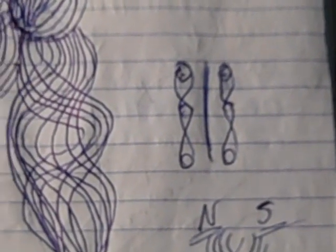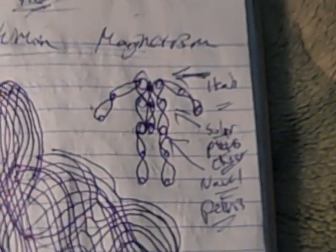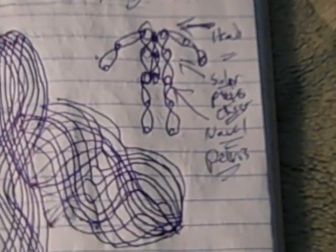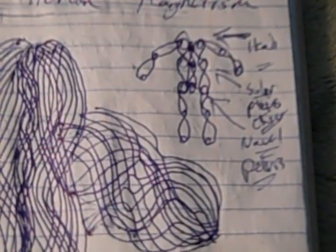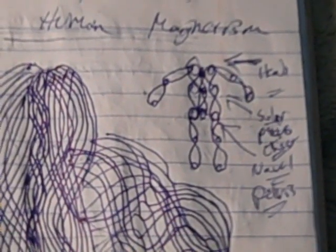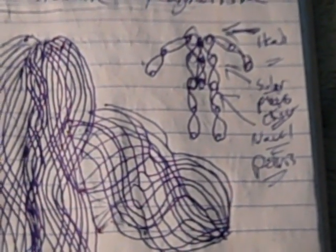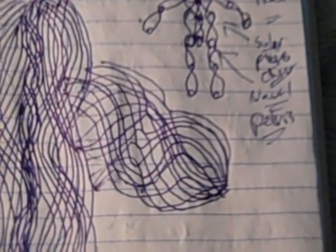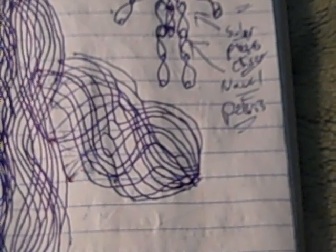And this would be the left and the right side of the body. What you see here, the top line is the head. This next line is the solar plexus, chest area, and then the third line is the navel and the pelvis.